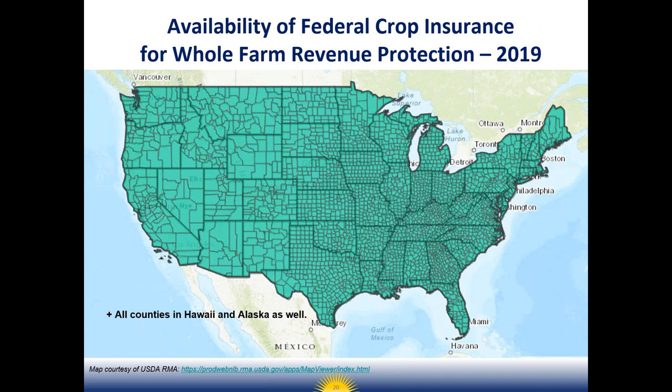Whole farm revenue protection is available in every county in the United States. No matter where you are, you can always protect your whole farm's revenue. This is dependent on the crops and livestock products you grow, not on any one specific one. So even in Montana, I can grow fresh market tomatoes and insure them with a whole farm revenue protection policy.